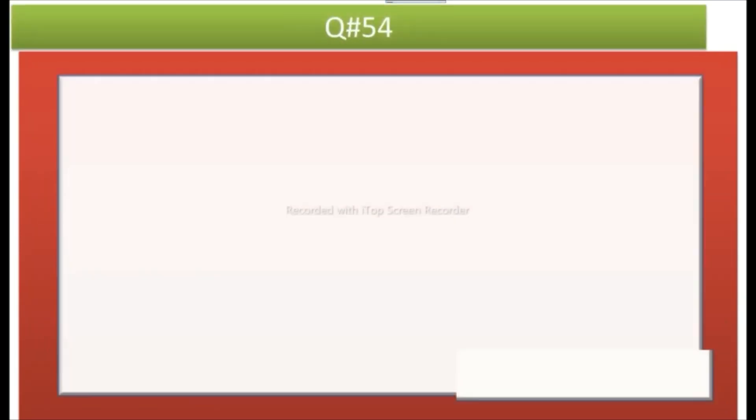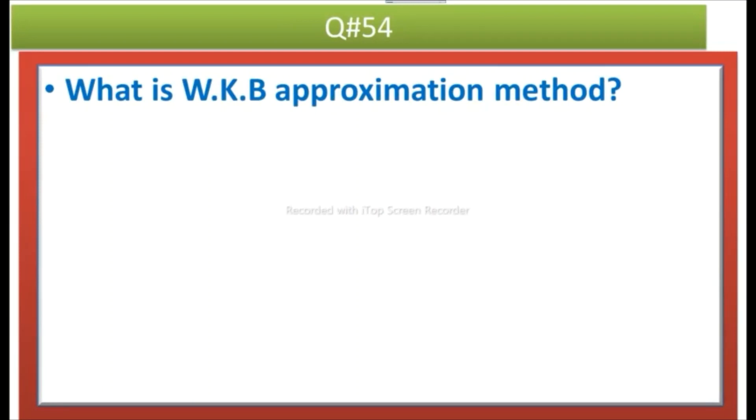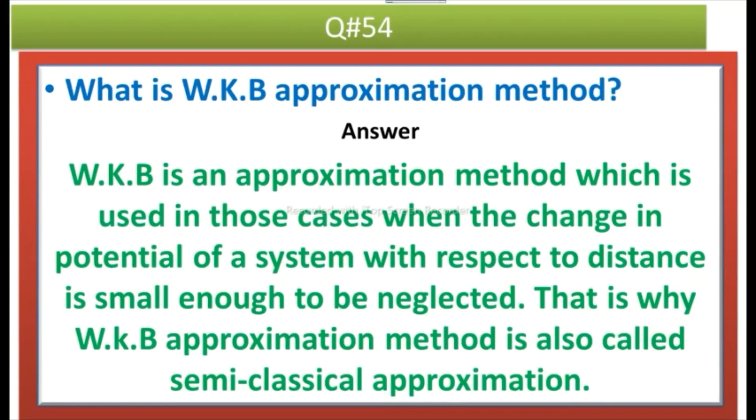The next question is what is WKB approximation method? Answer: WKB is an approximation method which is used in those cases when the change in potential of a system with respect to distance is small enough to be neglected. That is why WKB approximation method is also called semi-classical approximation.